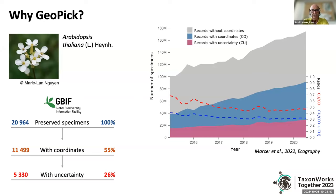In an analysis of GBIF data on preserved specimens, we found that despite the positive trend in the available number of preserved specimens data — shown in the gray area — data with coordinates, shown in the blue area, also grow but do not catch up with the former. And data with documented uncertainty, the reddish area, despite a slightly growing trend, falls behind in catching up with coordinates. Uncertainty documentation does not take off in this data.